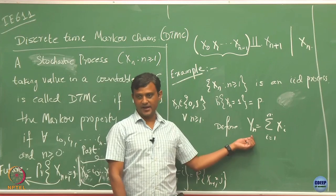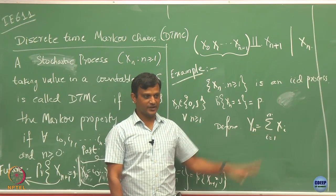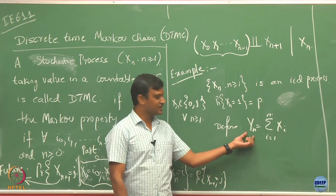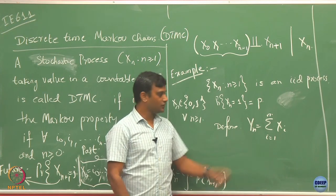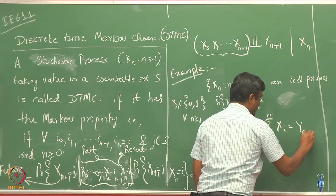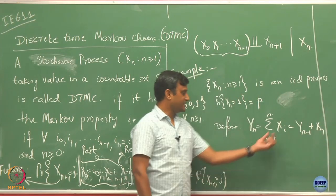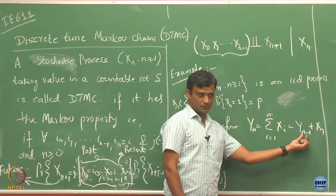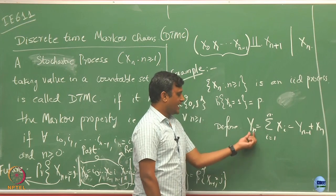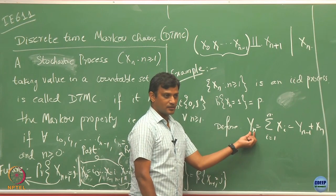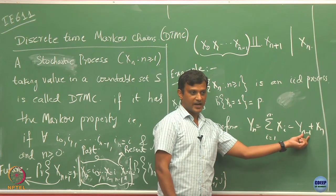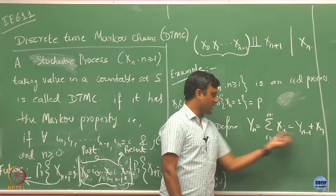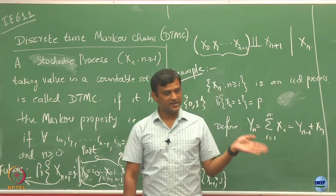Now let us define Yn as the sum of X1 through Xn, and ask whether Yn satisfies the discrete time Markov chain property. First, Yn is not IID. We can write Yn = Yn-1 + Xn, so Yn depends on the previous Yn-1. This means Yn and Yn-1 are no longer independent — the sequence is definitely not IID.